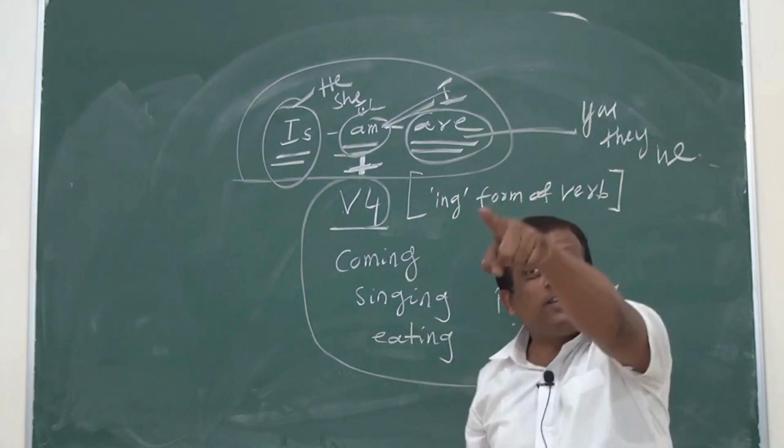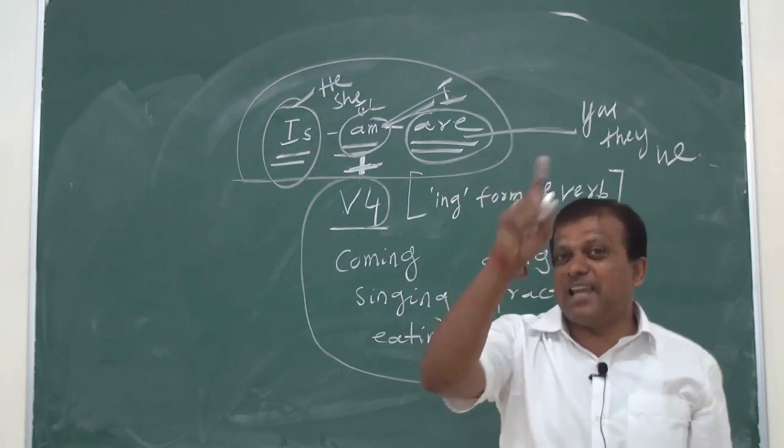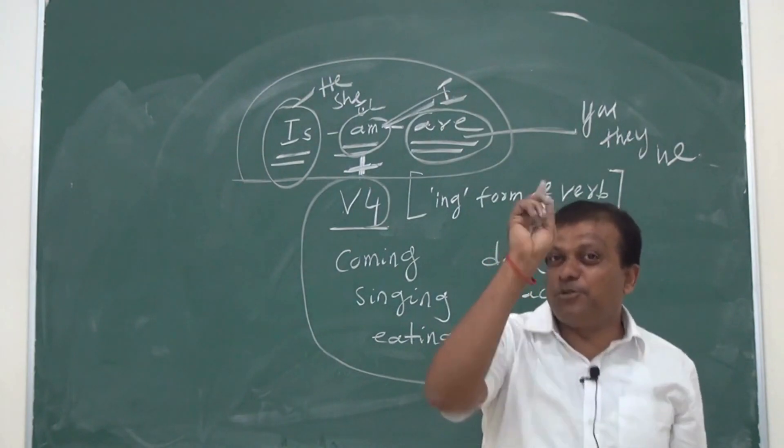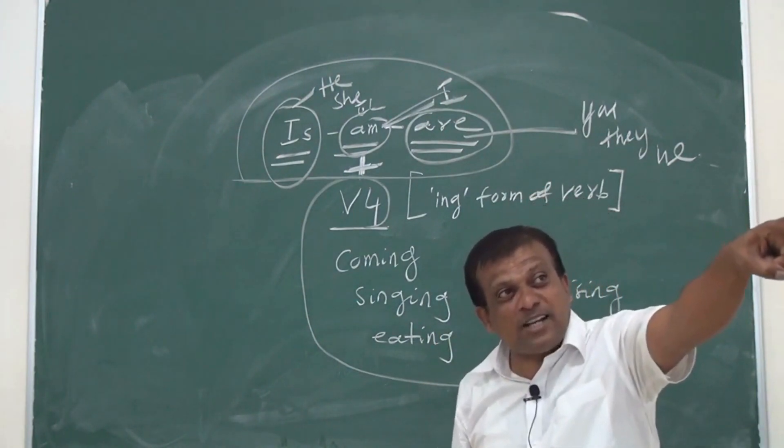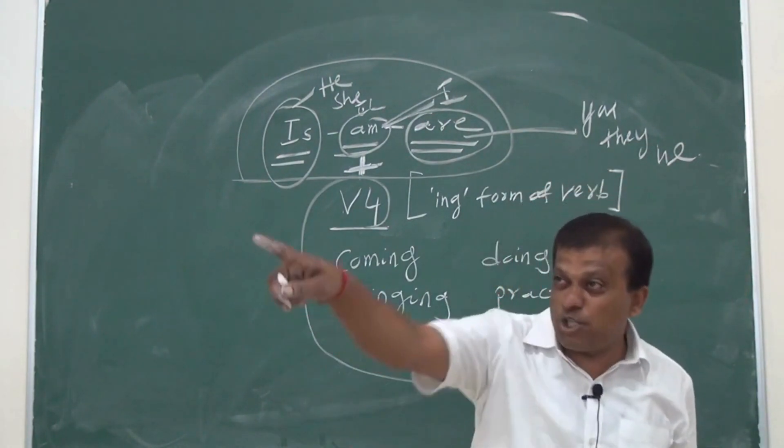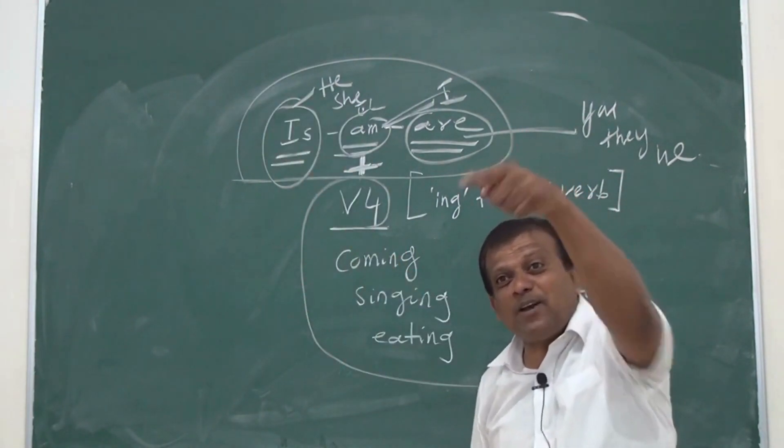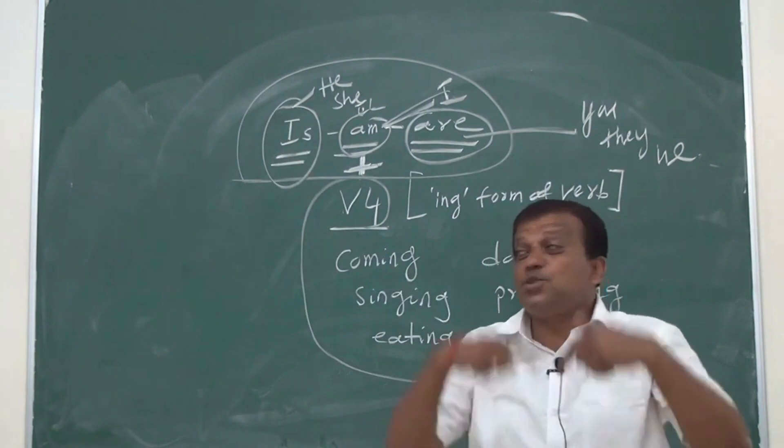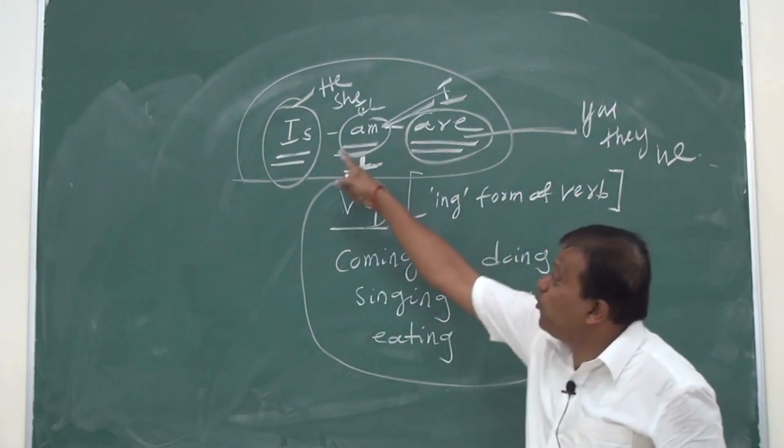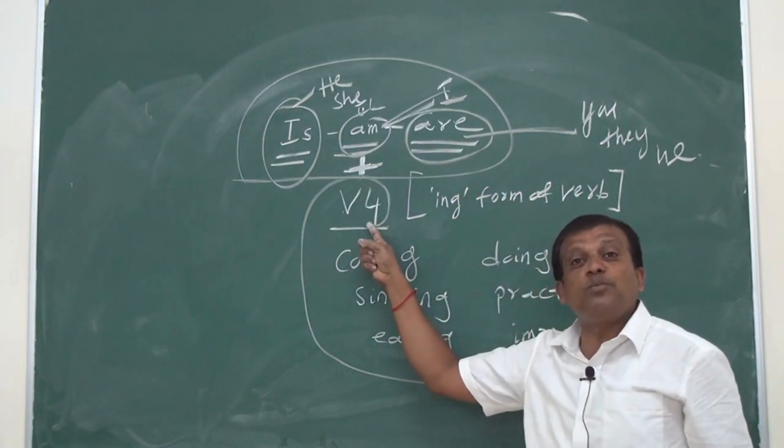Look at the children. What are they doing? They are standing in the ground, they are playing football. These children are playing cricket, these children are playing some other games. Those people are watching them. So without helping verbs, you cannot use verb number four.